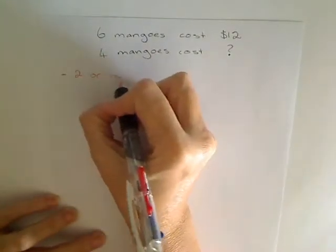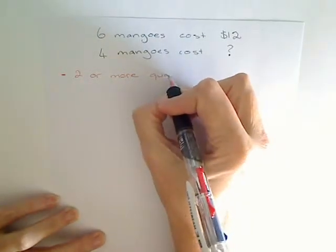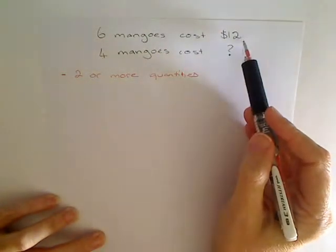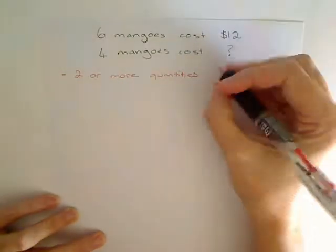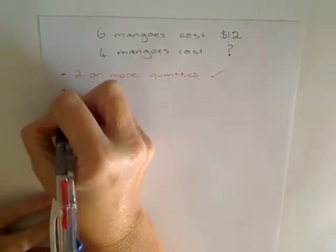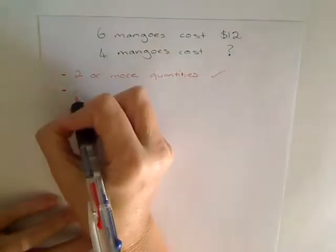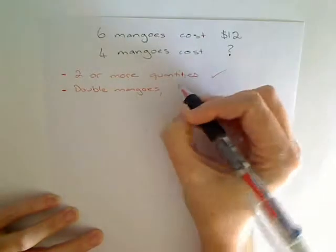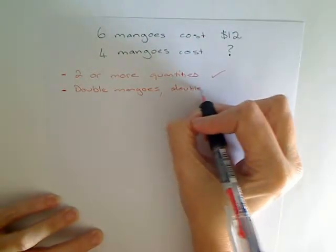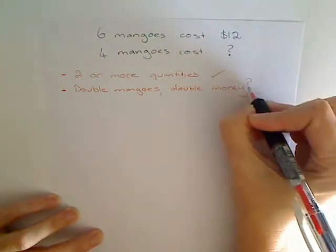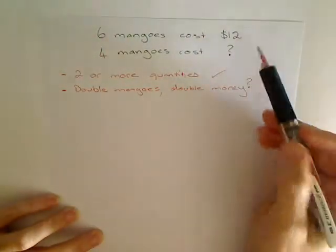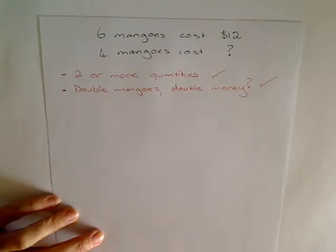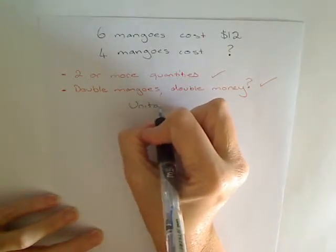First: do I have two or more quantities — things that can be counted? I've got mangoes and I've got money. Second: check for direct proportion. Doubling is the easiest way. If I double the mangoes, would I also double the money? If I buy twice as many mangoes, does it cost twice as much? Sure would. This is a direct proportion question, and that means the unitary method can be my best friend.